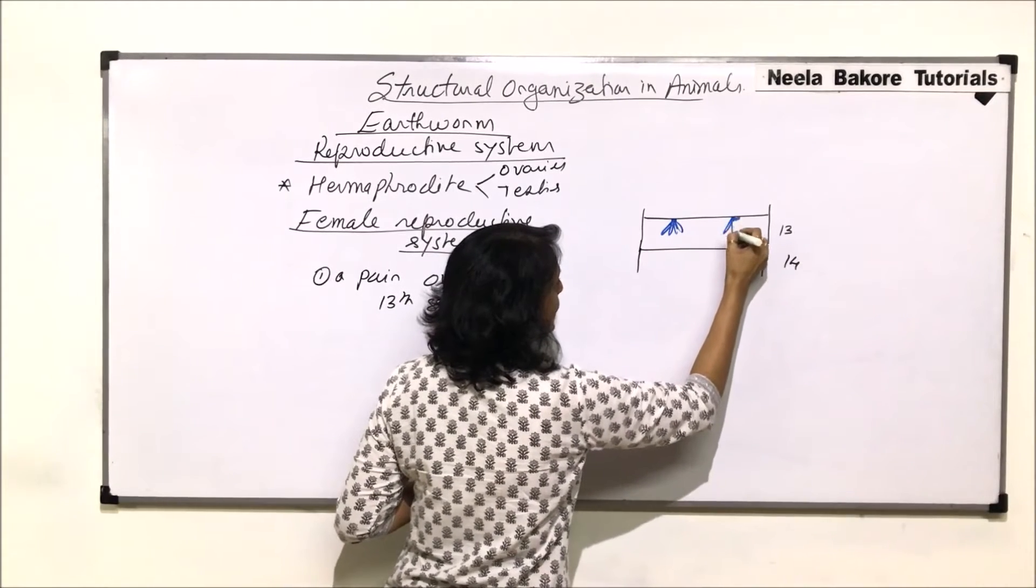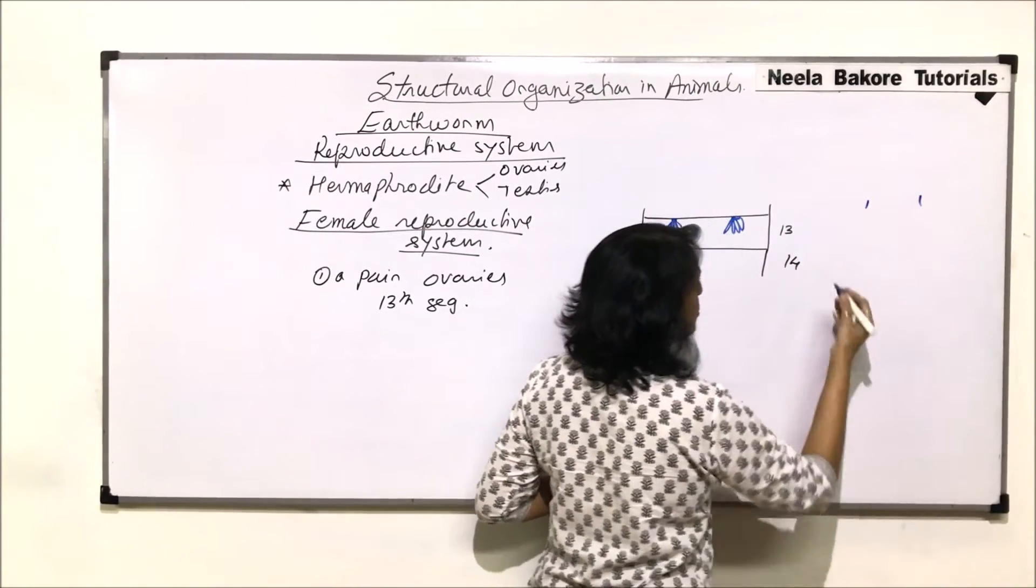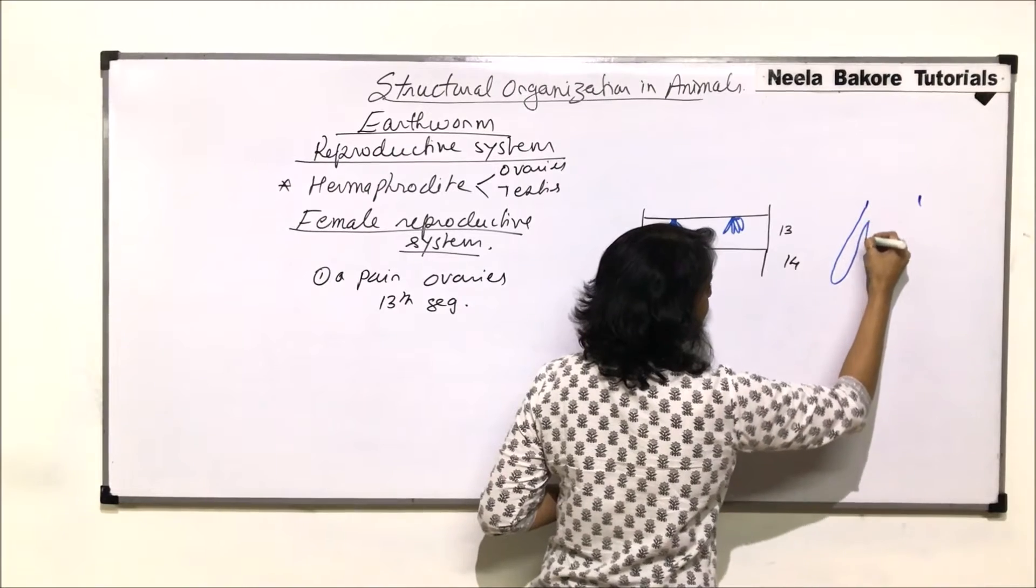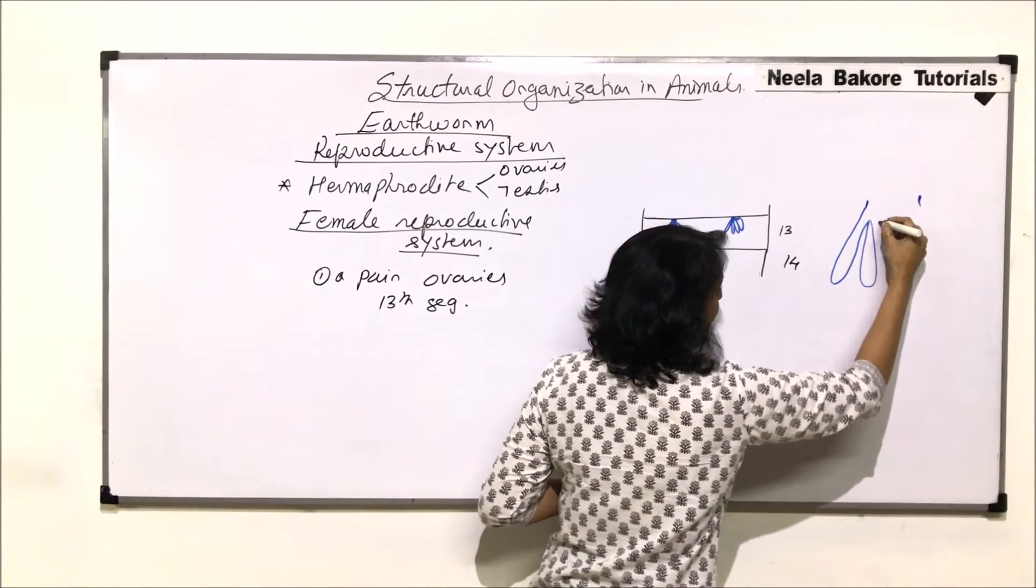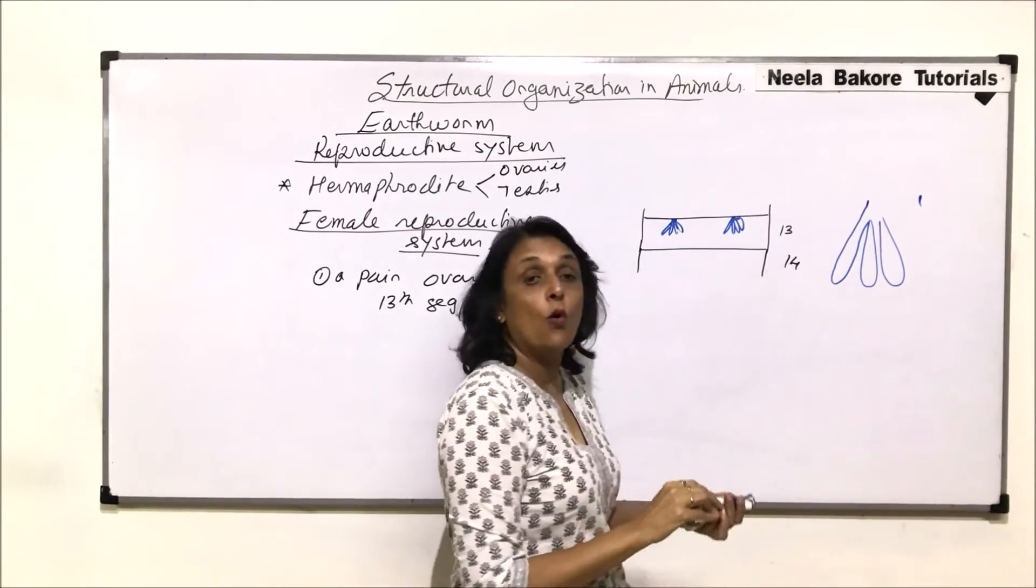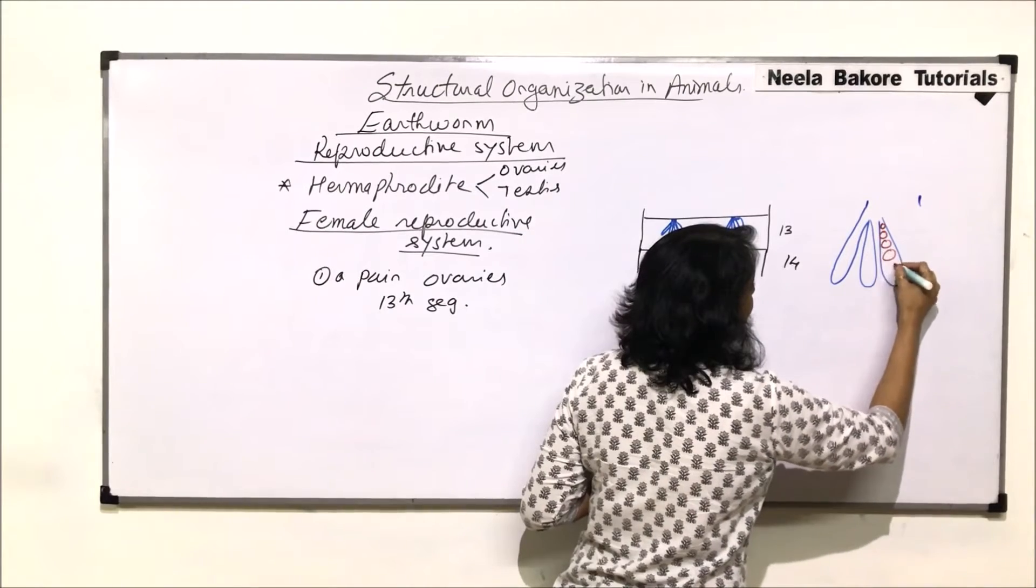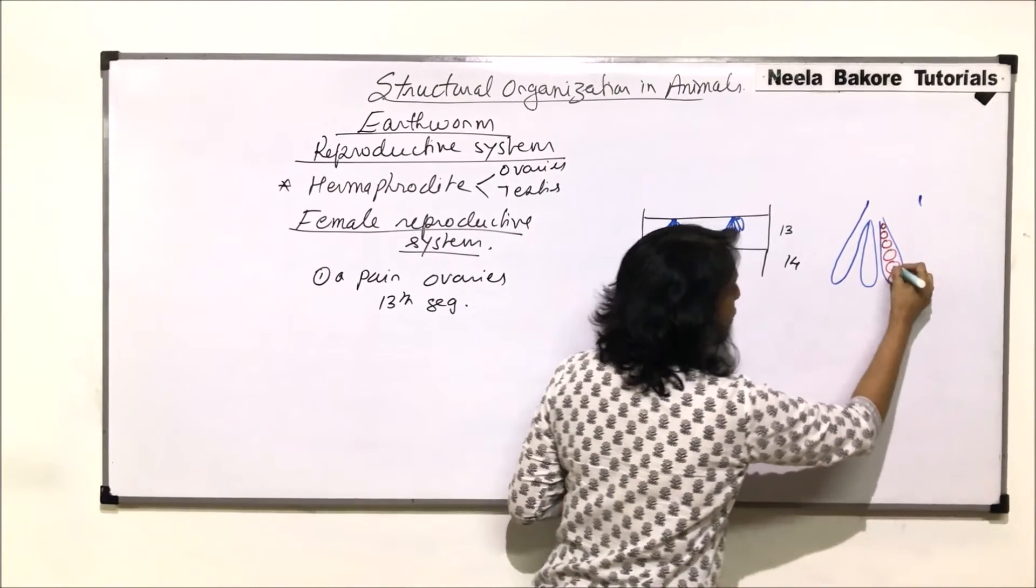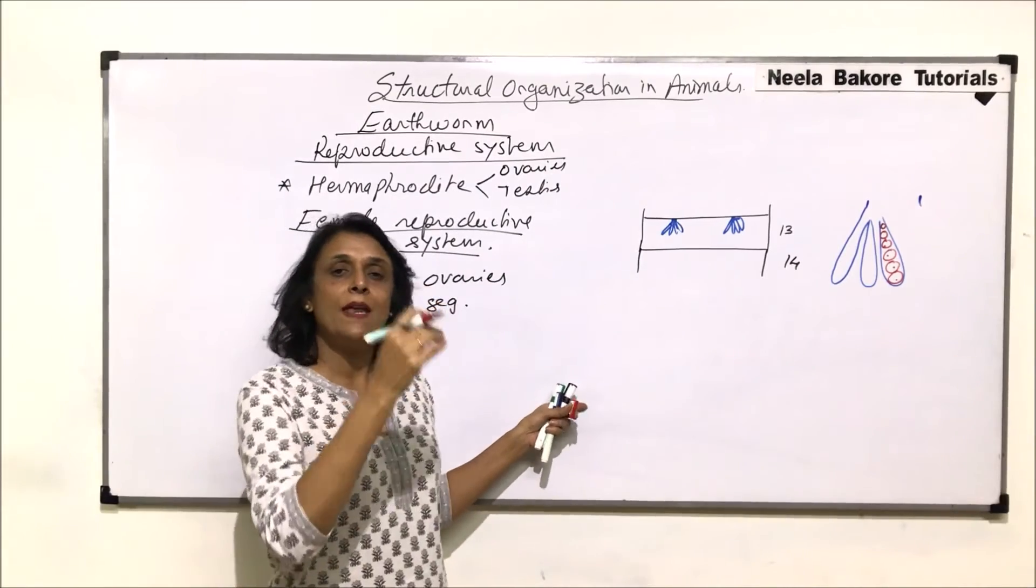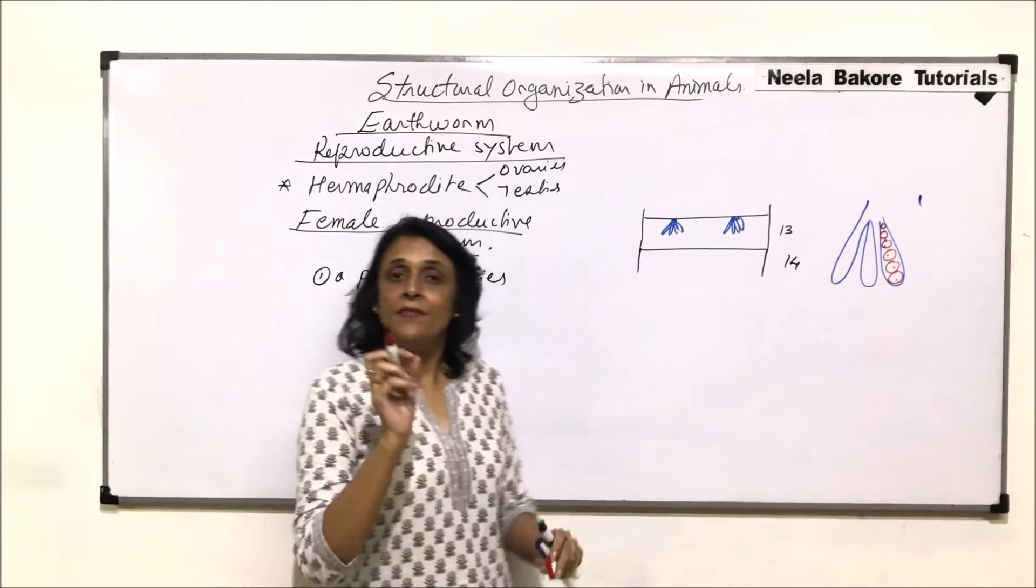If we enlarge this part, what is visible is the stalk and these many finger-like structures. In these finger-like structures we find the ova developing, and we see various stages of development. In every finger-like structure there would be many ova, and the egg would be released from the tip.